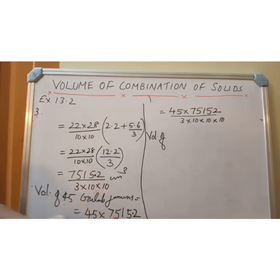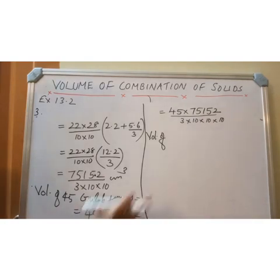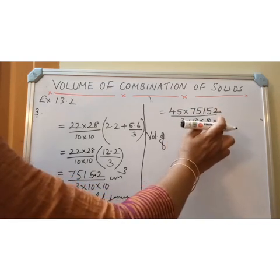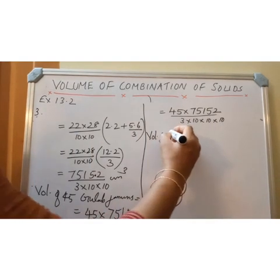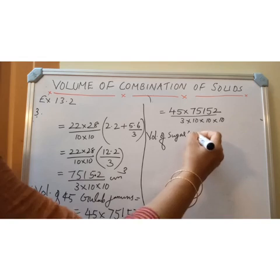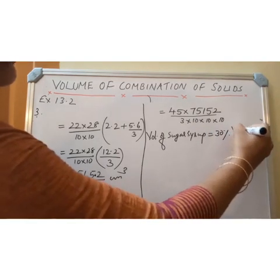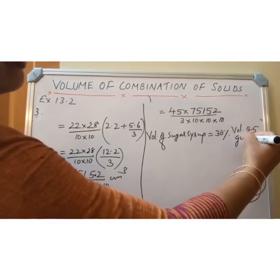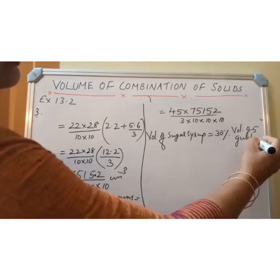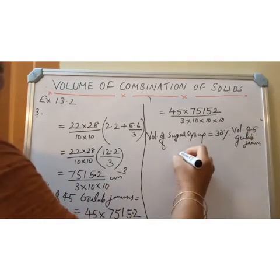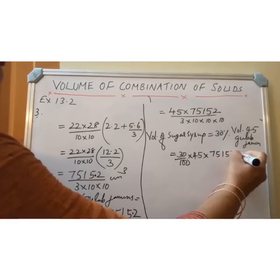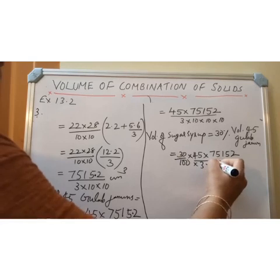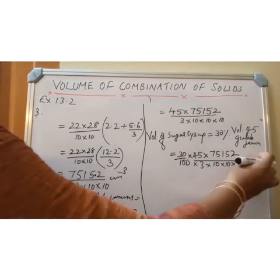Volume of 45 Gulab Jamuns equals 45 × 75152 divided by (3 × 1000). Volume of sugar syrup equals 30% of that, which is 30/100 × 45 × 75152 divided by (3 × 10 × 10 × 10), that is divided by 3000.